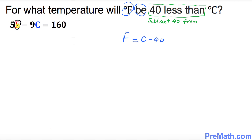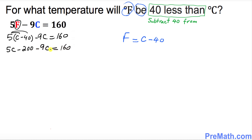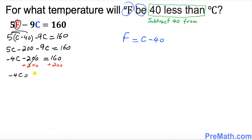So now using the formula with F equal to C minus 40, I'm going to replace F by C minus 40. So I put down 5 times (C minus 40) minus 9C equal to 160. Distributing that: 5C minus 200 minus 9C equal to 160. So 5C minus 9C gives negative 4C minus 200 equal to 160. Now I want to remove the 200 to the other side, so I add 200 on both sides — this cancels out — and we get negative 4C equal to 360. So C turns out to be negative 90 degrees.